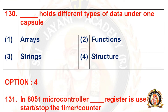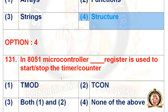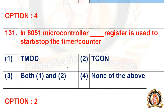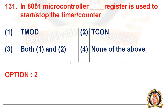Question 130: Dash holds different types of data under one capsule. Options are arrays, functions, strings, and structure. The right option is the fourth option, that is structure. For detailed solution, visit our YouTube channel Sci-chan Academy for solutions to all the questions.